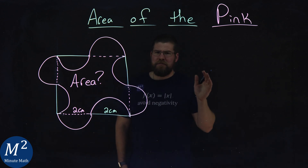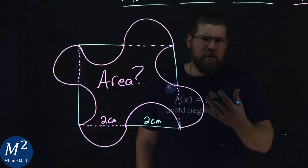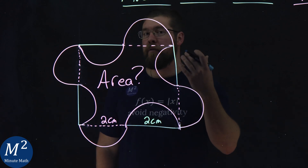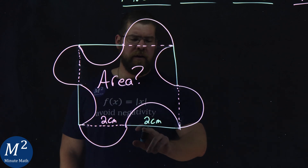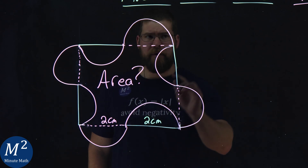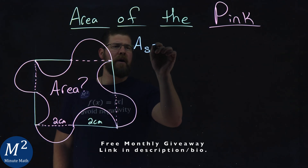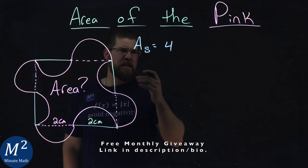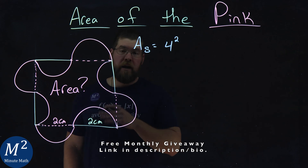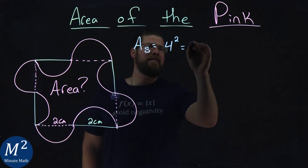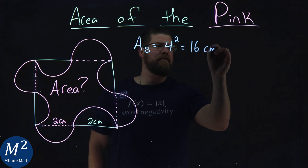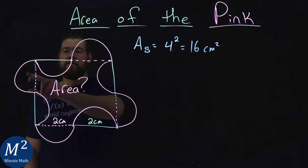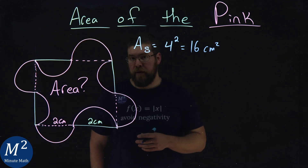Let's dive right into it. The regular way — not the fast way — you first want to find the area of the square. The square has a side length of two centimeters plus two centimeters, so the area of the square is equal to that side length: two plus two, which is four, and we square that side length. Area of a square is side squared, so we have 16 centimeters squared. Then what we want to do is add the extra semicircle areas on the outside and subtract the ones on the inside.